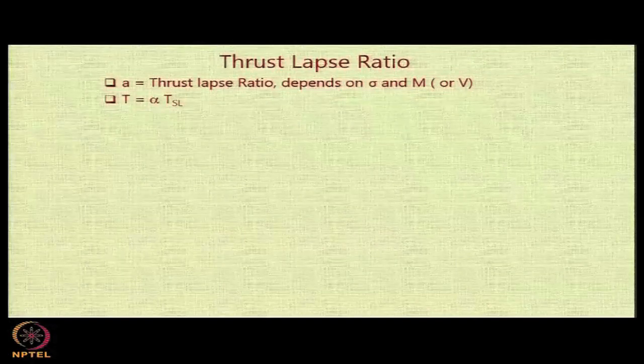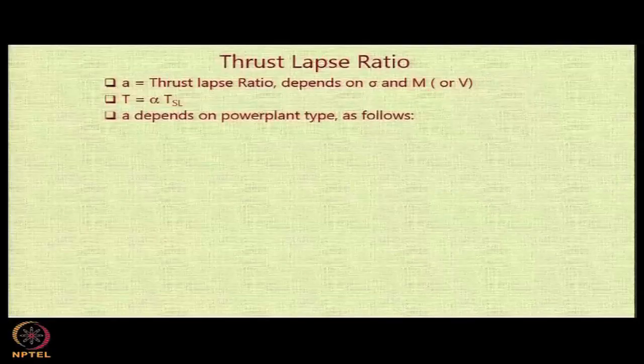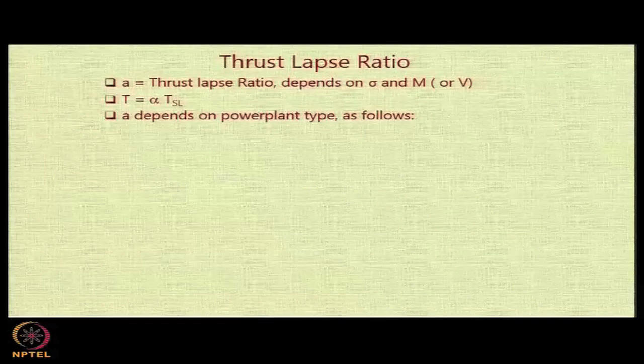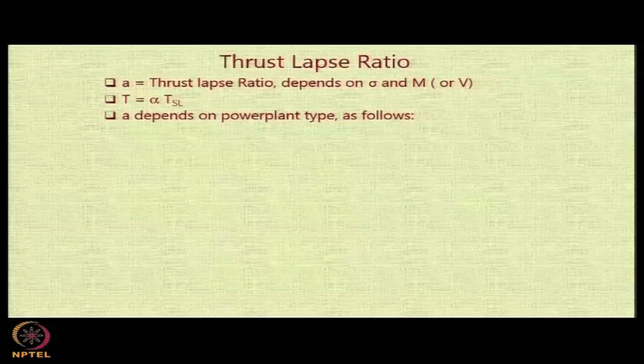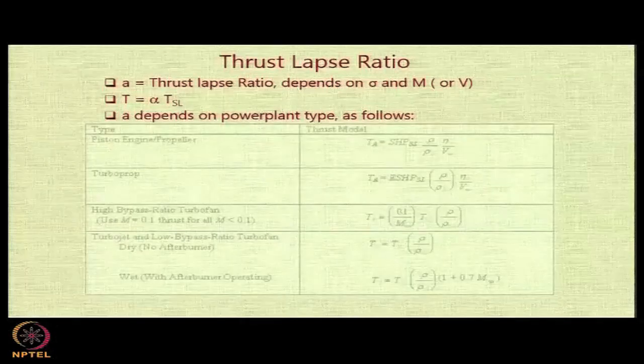It depends on the density ratio sigma and the Mach number or velocity as the case may be. At any condition, T will be equal to α times TSL. Note that α can also be more than 1 in case we are using reheat or afterburner, that is normally used in military aircraft during takeoff. In general, the value of α is going to be less than 1 at higher altitudes.